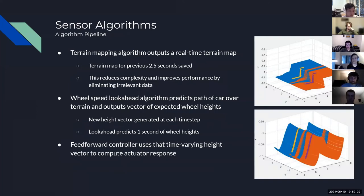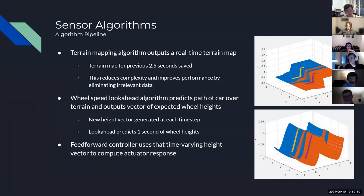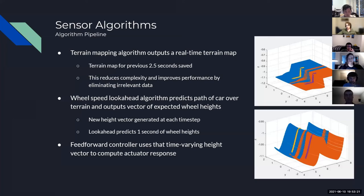Taking the real-time terrain map and real-time lookahead algorithms together, we get the whole algorithm pipeline that takes initial disturbance data from the ground, makes a map of it, computes the expected wheel paths over that terrain, and outputs that to the controller. We found saving the terrain map for about 2.5 seconds covers enough terrain for the wheels to always have data, and a lookahead of about one second was sufficient. We were going to implement the entire pipeline including the controller in Webots but ran into bugs, so we gathered all the lookahead data in Webots and ported it to Simulink.